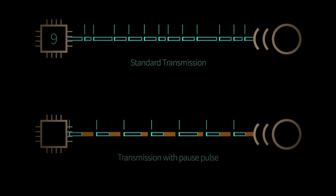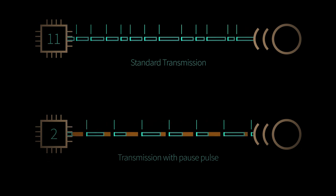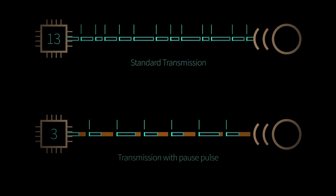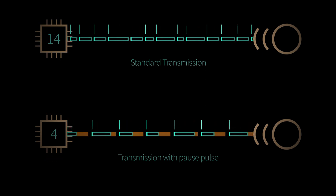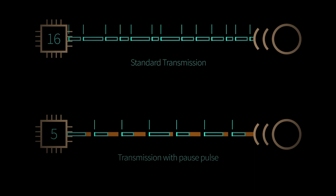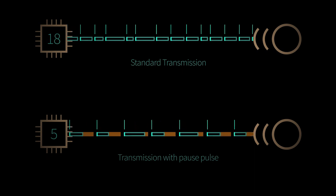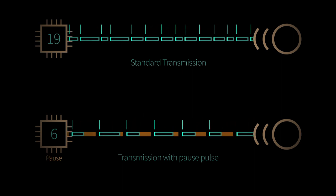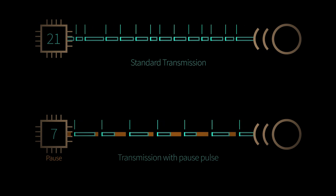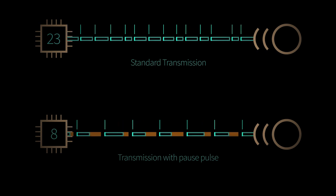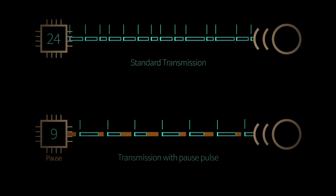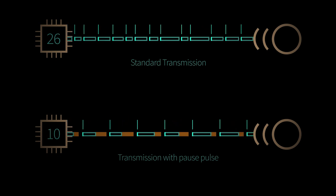However, it may be desirable for each data frame to have the same length. This way a time synchronization of the data telegrams takes place. For this the SENT protocol provides the optional pause pulse. Adding the pause pulse results in data telegrams which have the same length, but at the same time the data transmission is slowed down by this delay.